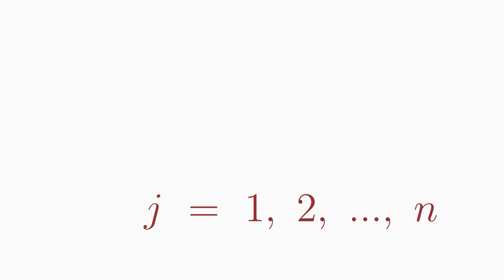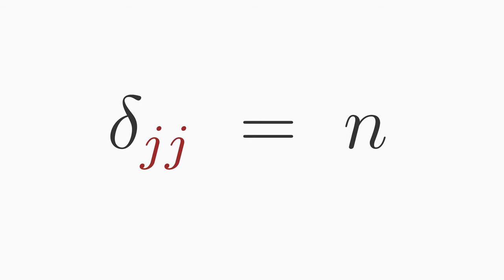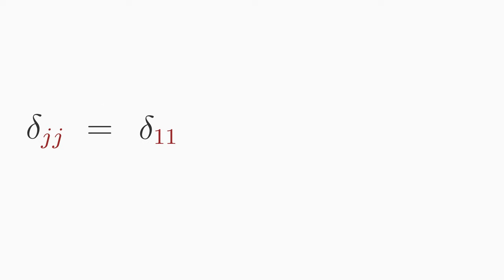Rule number four. If j runs from 1 to n, then delta jj is equal to n. Why is that? According to the summation convention, the summation is carried out over j here. So delta jj is equal to delta 1 1 plus delta 2 2 and so on, up to n. And each Kronecker delta yields 1 because the index values are equal. So 1 plus 1 plus 1 and so on results in n. If, for example, like in our case j runs from 1 to 3, then delta jj will be equal to 3.